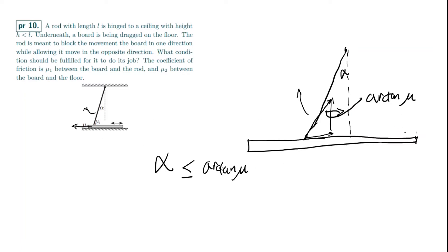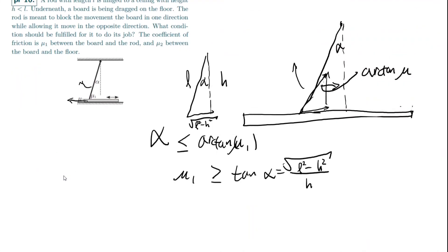And mu in this case is mu sub 1. So alpha is less than or equal to arctan mu sub 1. That means mu sub 1 is greater than or equal to tangent alpha. And we can find tangent alpha from geometry. We have that the length of the rod is l, and this height is h, and this is alpha. So this is square root of l squared minus h squared by Pythagorean theorem. So tangent alpha is equal to square root of l squared minus h squared over h. So mu sub 1, our condition for this problem is mu sub 1 greater than or equal to root of l squared minus h squared over h.